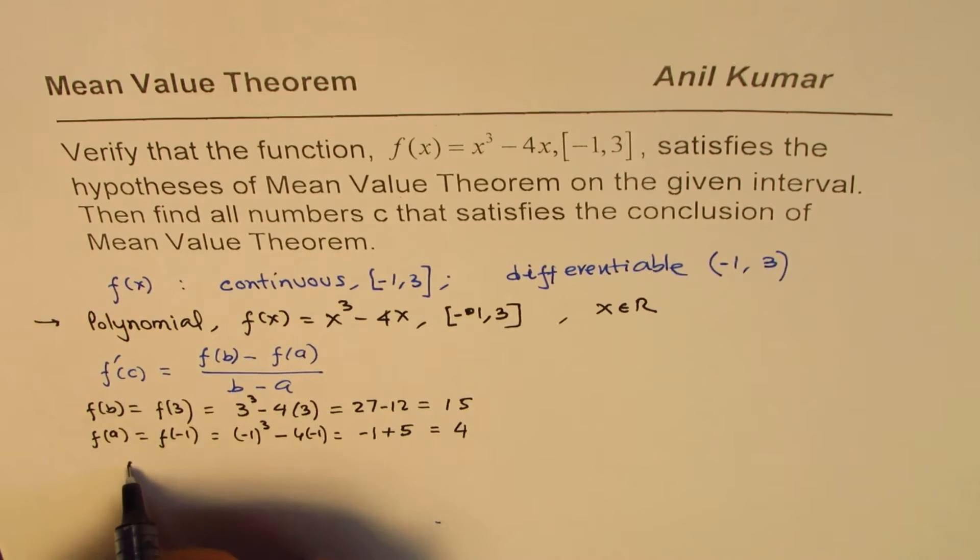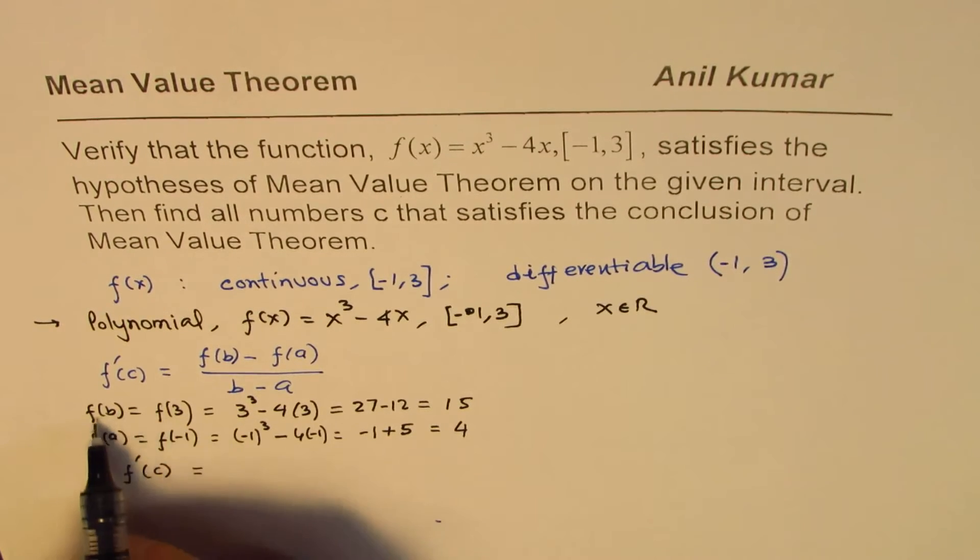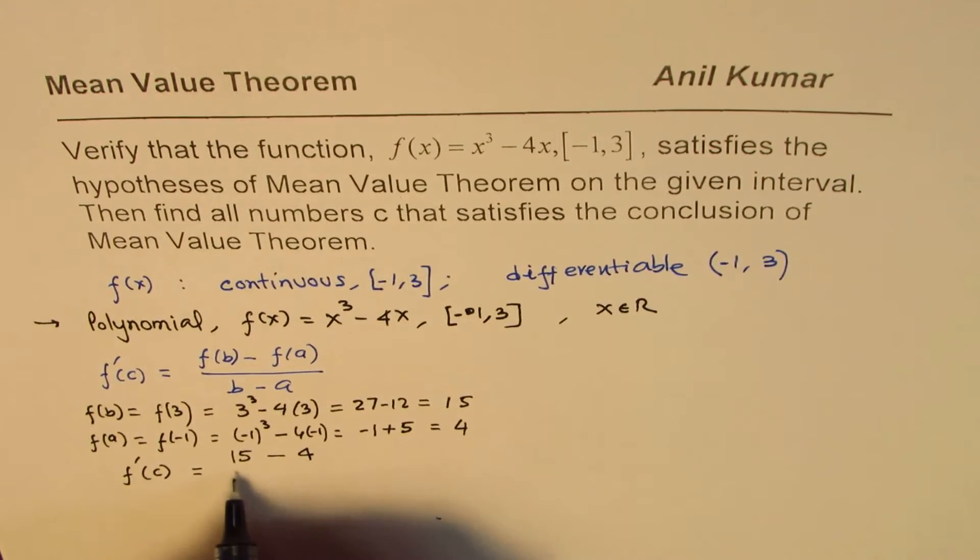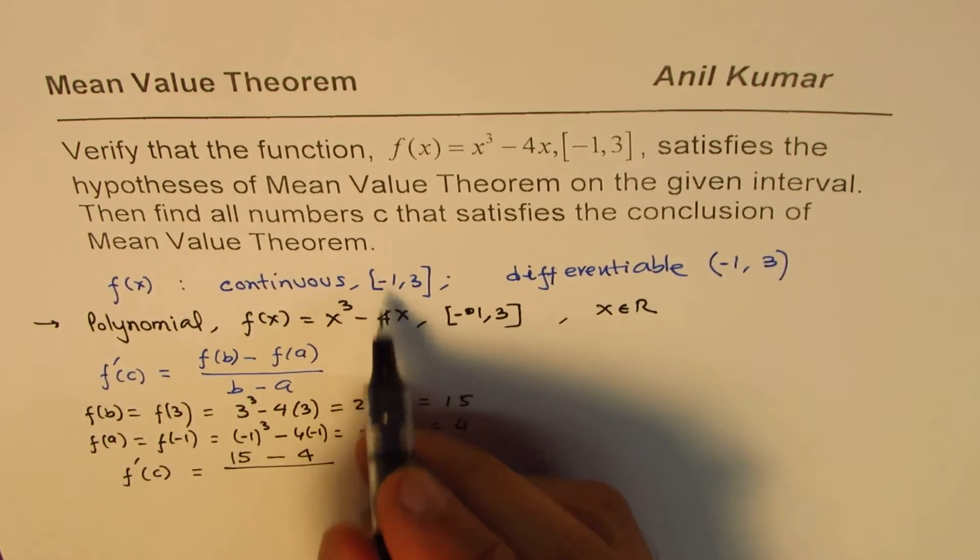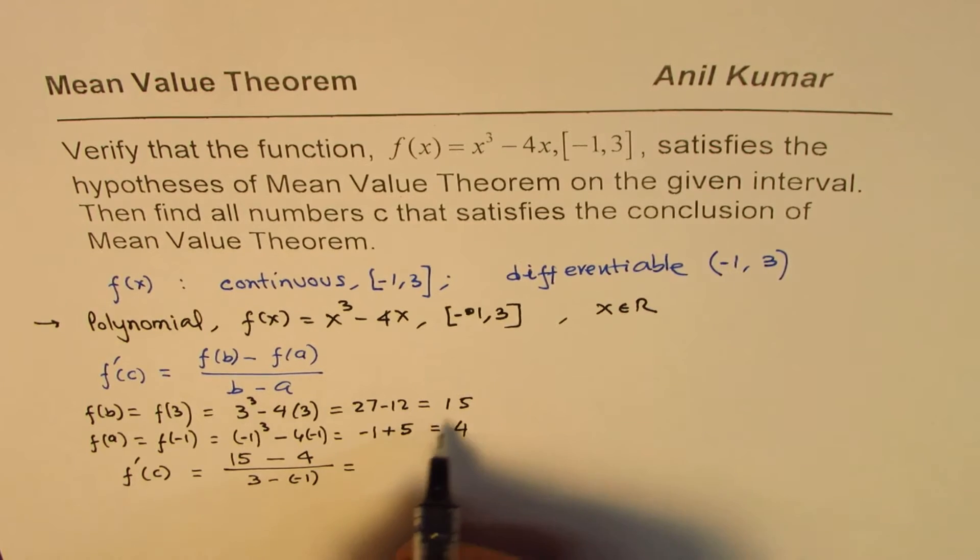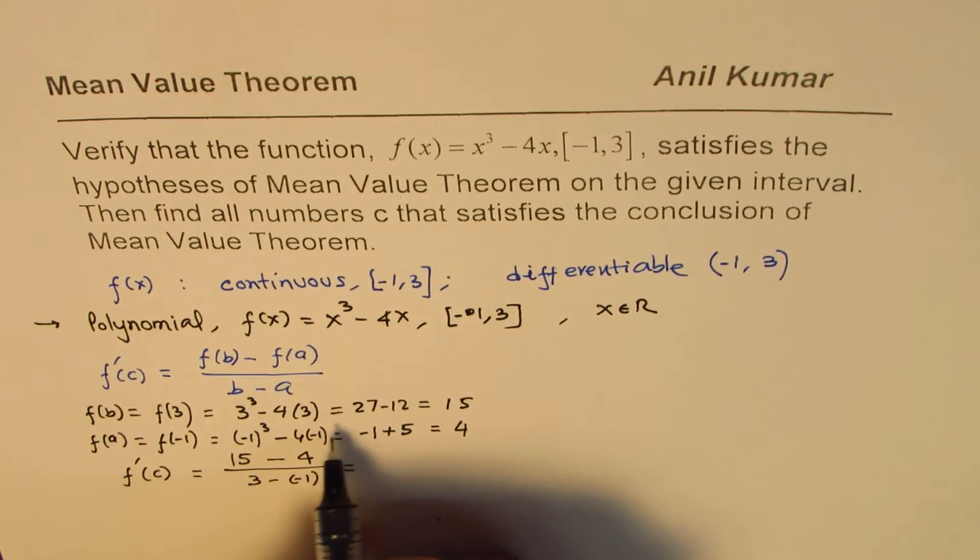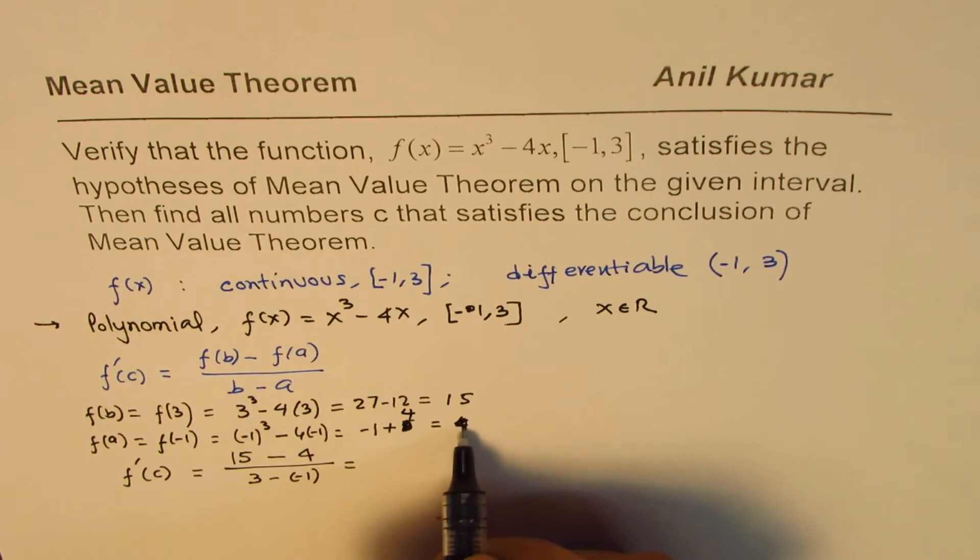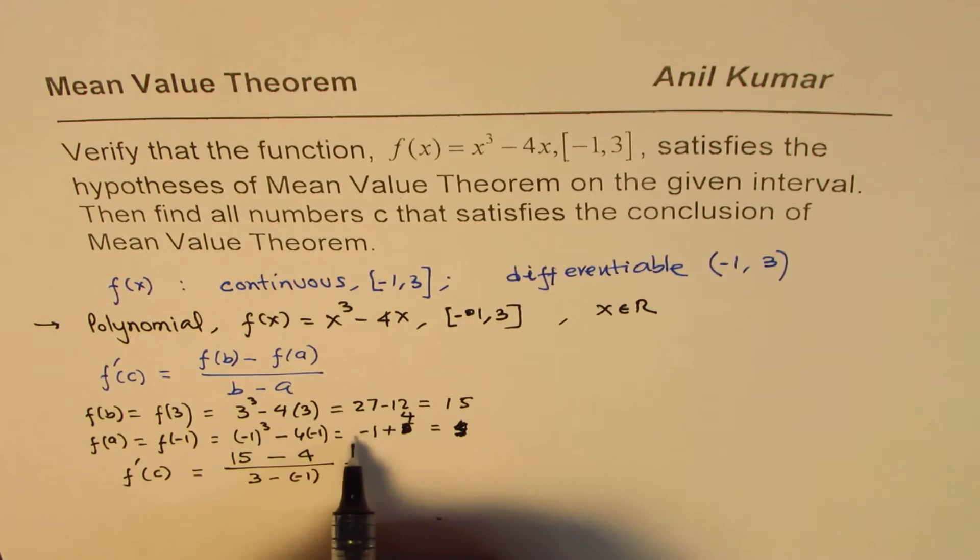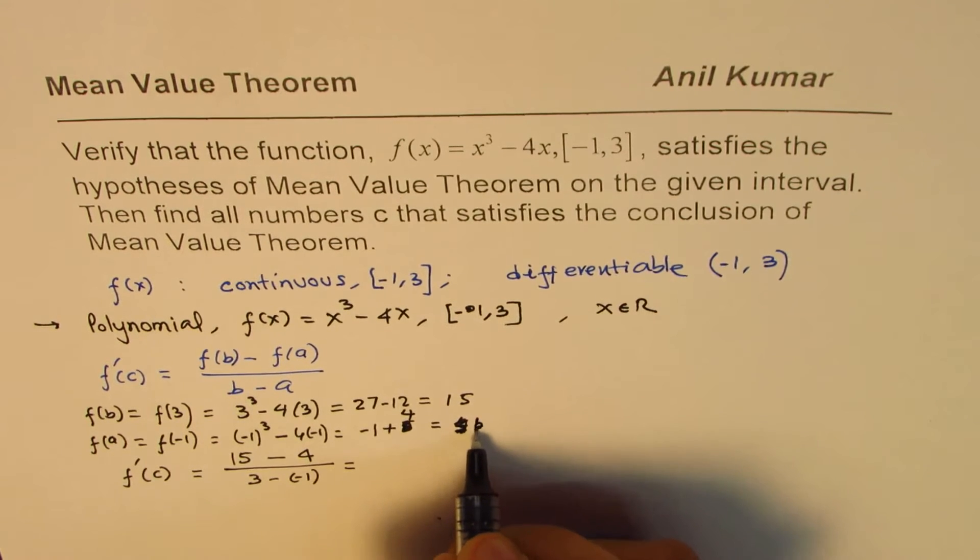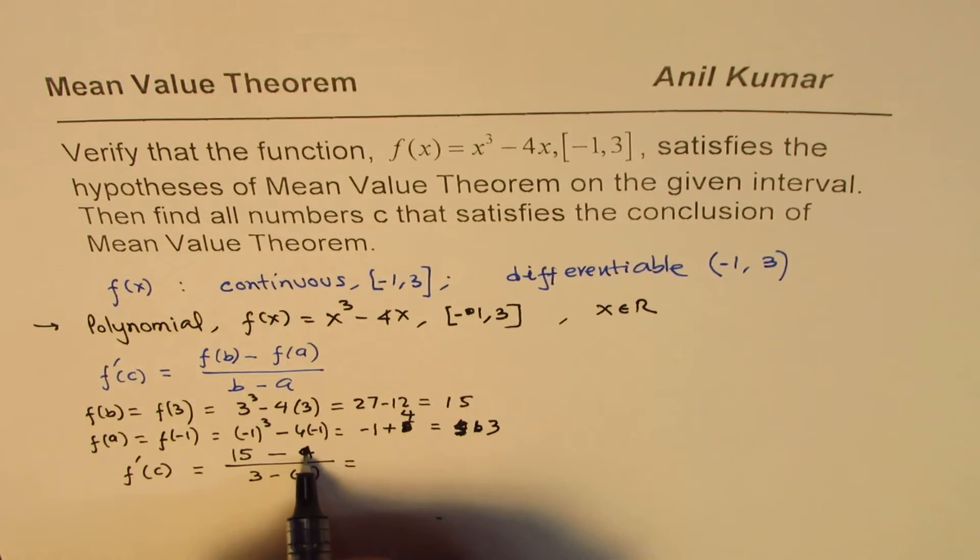So, from here, we can say what should be f dash c equal to. So, f of b is 15. So, we'll do 15 minus 4 divided by 3 minus minus 1, which is 3 minus minus 1. I think I did a mistake here. 4 times minus 1 was not 5, but 4. Let me correct this. Good time to check it. So, we have minus 1 plus 4, which is 3. So, this value is not 4, but 3.